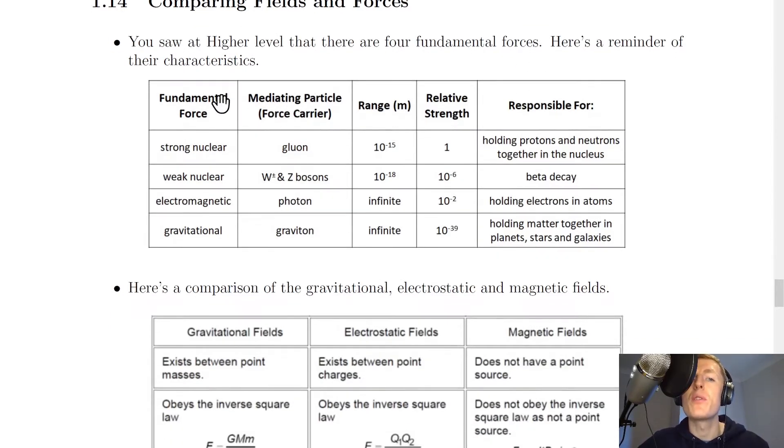So we've got this table with fundamental force, mediating particle, also known as a force carrier, range in meters, relative strength and responsible for. So the strong nuclear force, first of all, remember its force carrier or mediating particle is the gluon. It's got a range of about 10 to the minus 15 meters and its relative strength compared to itself is one. So we're going to compare the strength of the others to that strong nuclear force. And remember the strong nuclear force is responsible for holding protons and neutrons together in the nucleus.